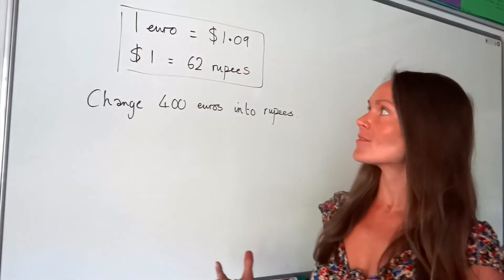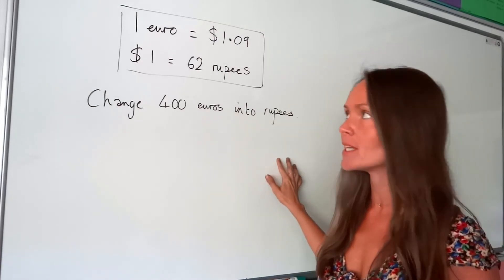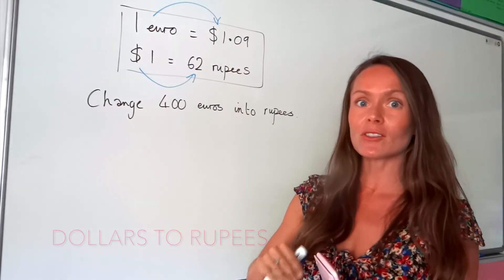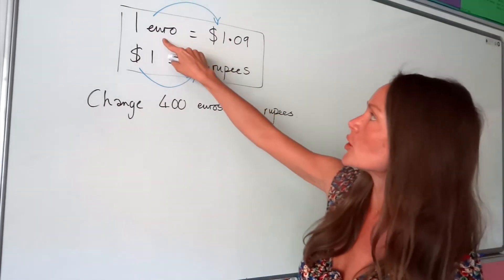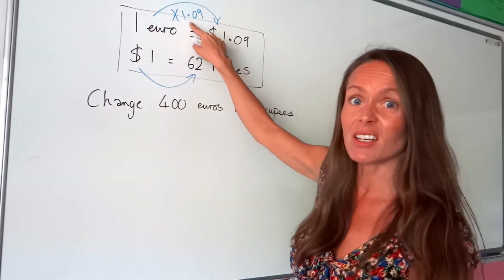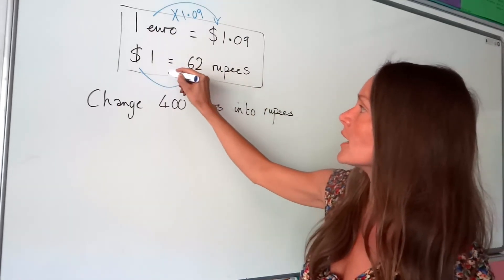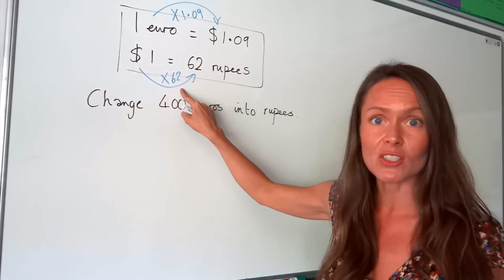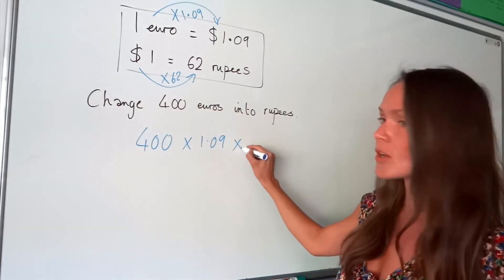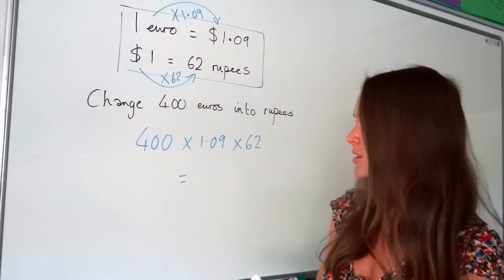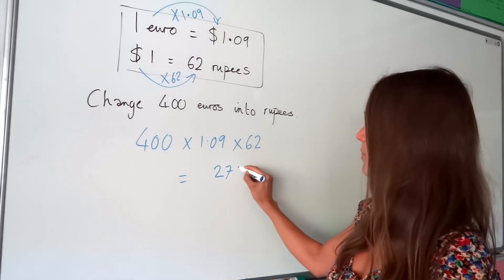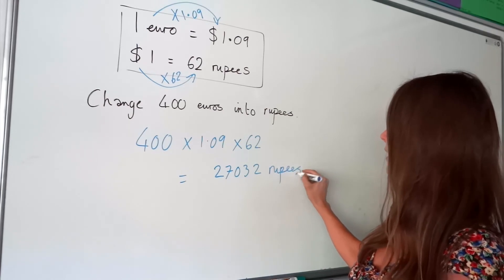In this question we don't have an exchange rate that changes euros straight into rupees, so we need to change euros into dollars first and then those dollars into rupees — two steps. To change euros into dollars I multiply by 1.09, because 1 multiplied by 1.09 is just 1.09. Then to change dollars into rupees I multiply again by 62. So I multiply 400 euros by 1.09 and then by 62 — all in one go — and the final answer is 27,032 rupees.